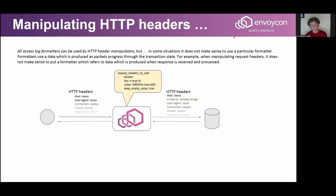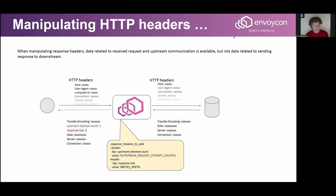Here is an example: we try to manipulate the request headers, but the formatter relates to a future event — getting some data from the response, which obviously hasn't happened yet. In those cases you can still configure it, but the result produced by the formatter will be an empty string. Things are a little better when modifying response headers, mostly because more data is available: data related to upstream connection, which host was selected, whether the connection was TLS, how many times Envoy tried to reach upstream, and the time waited for the response.